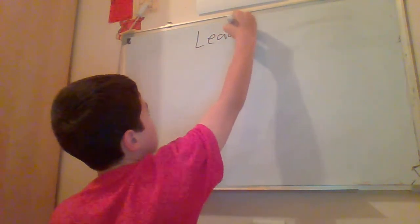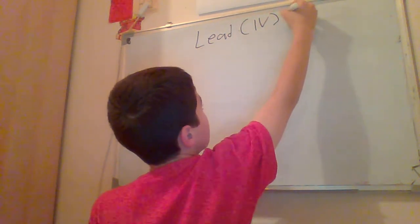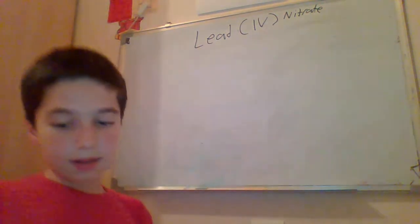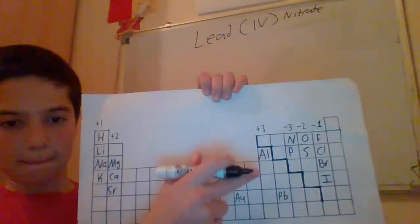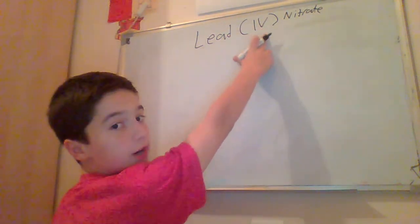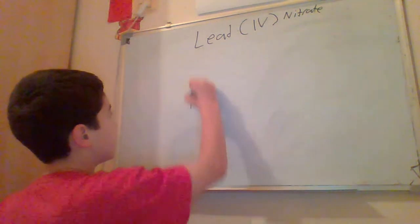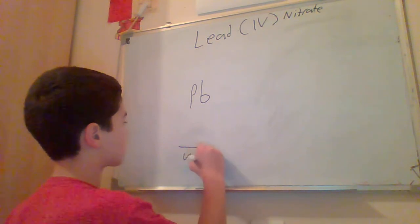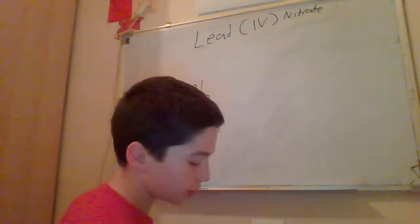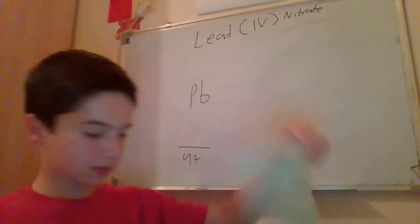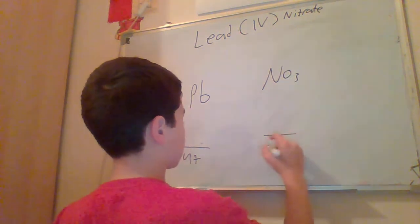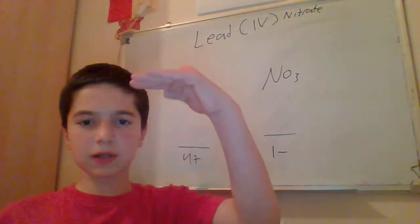The example is lead(IV) nitrate. Lead is Pb in the periodic table and it has a four plus charge. So Pb has a charge of four plus. Nitrate is a polyatomic ion with a one minus charge. So we have four plus and one minus — the charges are not balanced.